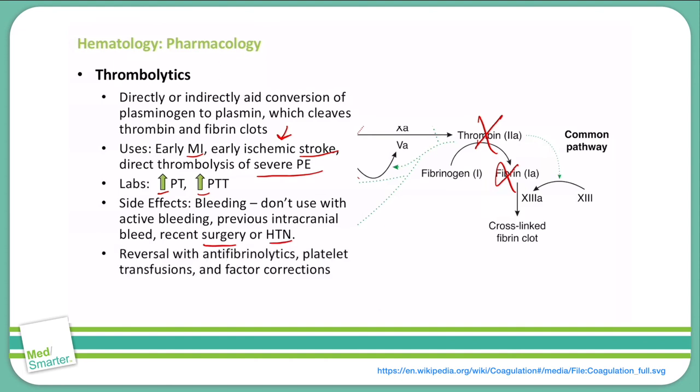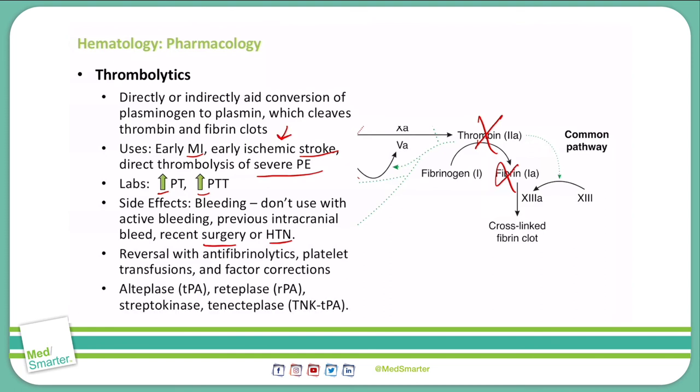To reverse the function of thrombolytics, we can use antifibrinolytics, platelet transfusions, or factor corrections. Some examples of thrombolytics include alteplase, which is the most common one you've heard of, also known as TPA. Reteplase, streptokinase, and tenecteplase are also thrombolytics.